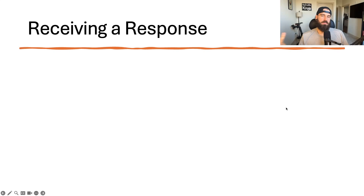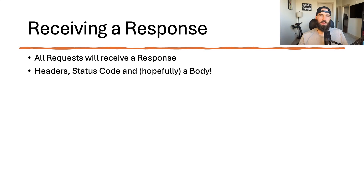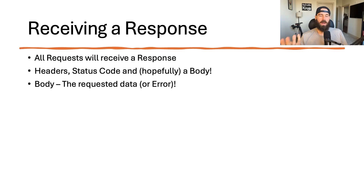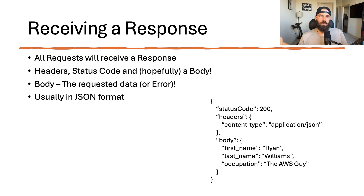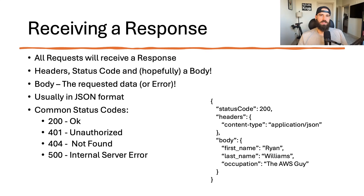All client requests successfully received by the server will return a response. A response generally includes headers, a status code indicating success or failure, and hopefully a body object if successful. The body includes the requested data, or an error if unsuccessful — usually in JSON format. You can see here an example with a status code, headers, and a body object of the requested data. 200-level status codes indicate success, 400-level codes indicate an error with the client request, and 500-level codes indicate an error with the server.